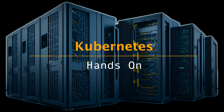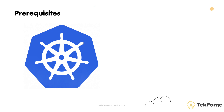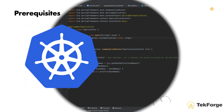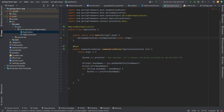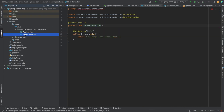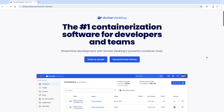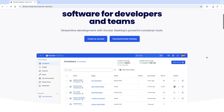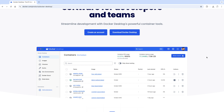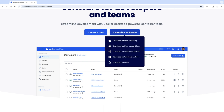Before we jump into the fun part, there are a few tools you will need to have in place. I'll walk you through everything you need to get started. For this demo, I'll be deploying a simple Spring Boot application using Minikube. First, you need to install Docker Desktop. It includes Docker CLI and Docker Daemon, and it also provides a Kubernetes option that we will use along Minikube.